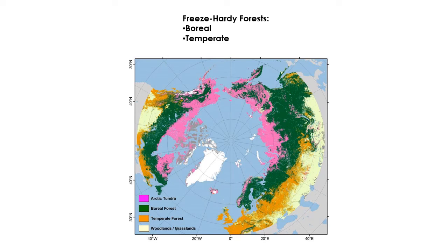In the last video we talked about forest types at the very broad, global scale, and the different kinds of forests in different places. In this video I want to focus in on North America, really focus on the two freeze-hardy forests — the two forests that experience change of seasons and can tolerate freezing — and that's the boreal forest and the temperate forest.